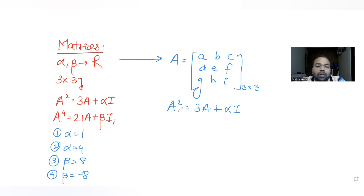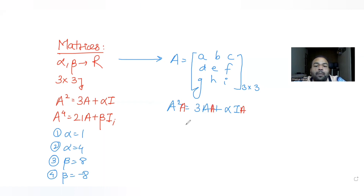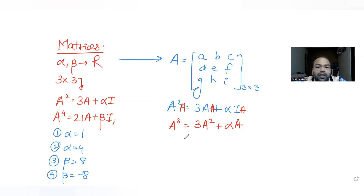Let's develop this equation to form A⁴ on the left-hand side, since we have been given an equation in terms of A⁴. What I will do is post-multiply with A on both sides. A² × A becomes A³, and this becomes 3A² + αIA, which simplifies to 3A² + αA. So we get A³ = 3A² + αA.